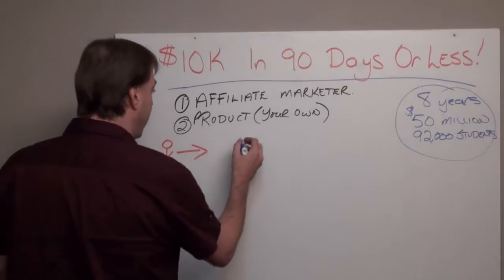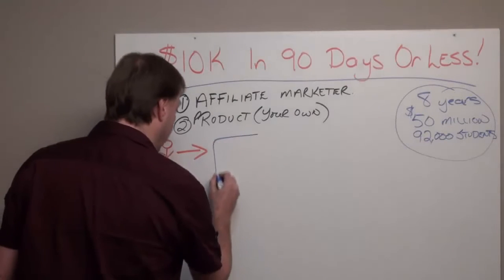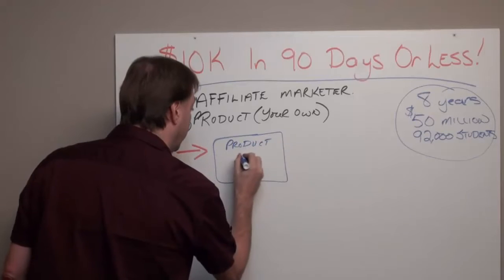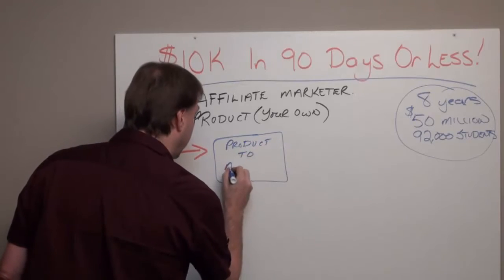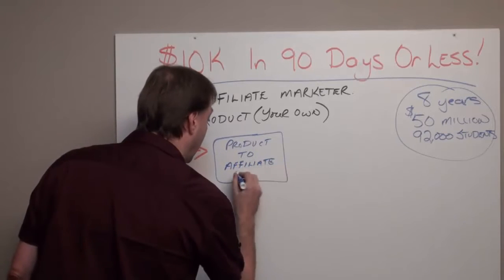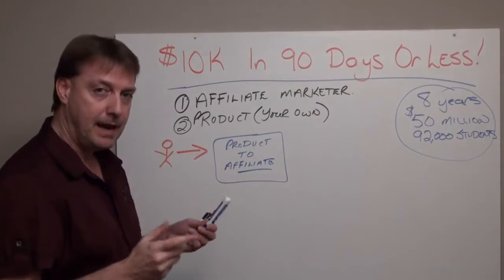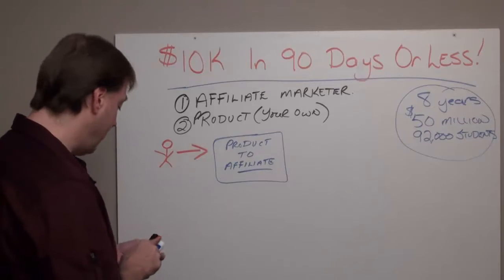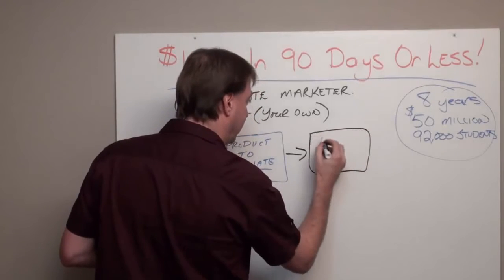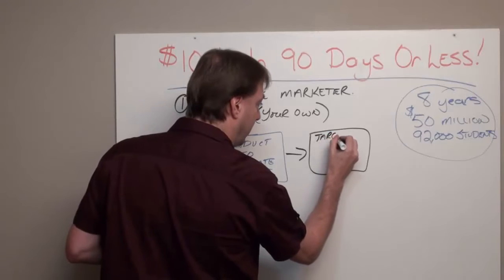So we go out and put 100% of our effort into finding a product to affiliate. We find a product that we think will convert, and from there we have to find traffic — targeted traffic. Then we have to research targeted traffic.